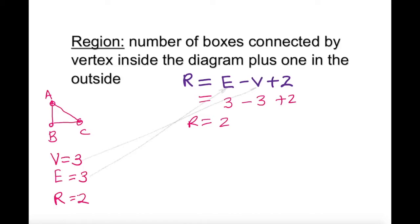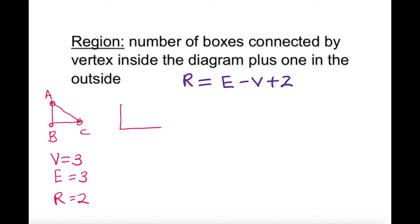Three minus three plus two gives two regions. I don't really have to use the formula — I can easily do trial and error by looking at the diagram and counting how many boxes are inside, bounded by the nodes or points. That situation can get a little confusing, so let me make sure you understand with some extra examples.